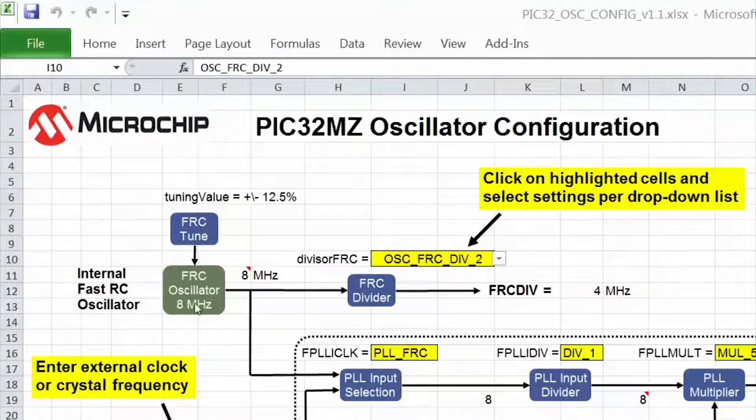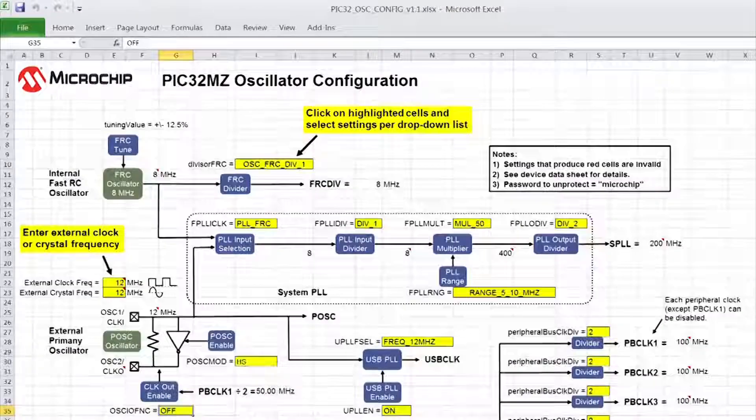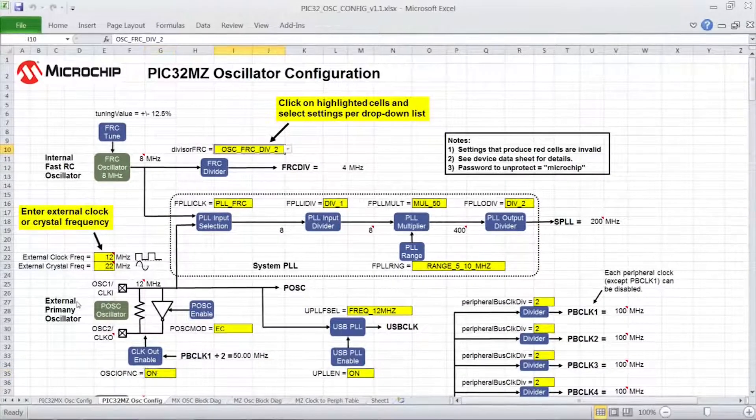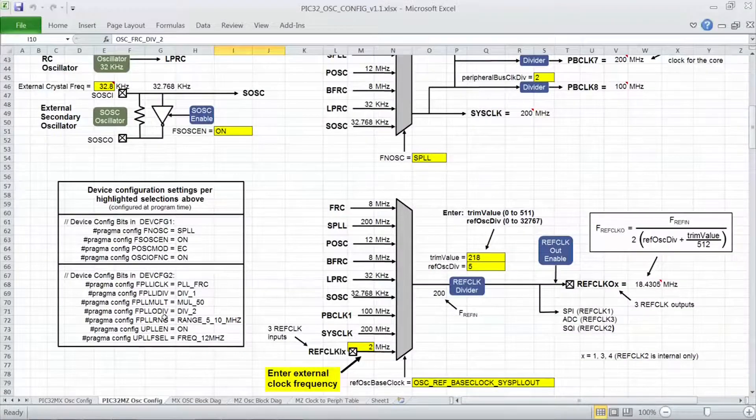Some of these settings are determined at build time, and some are determined at run time. All build time settings use the device configuration names defined in the datasheet. These settings will be grouped in this area, so you can easily cut and paste them into your code.